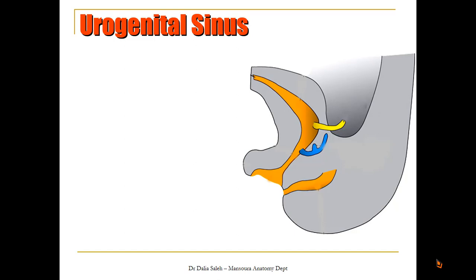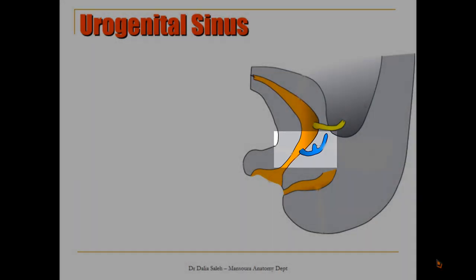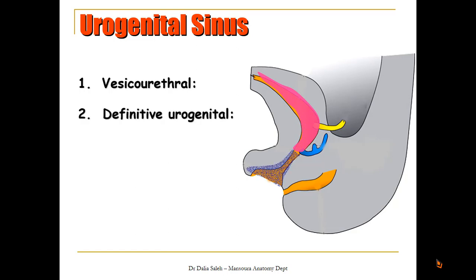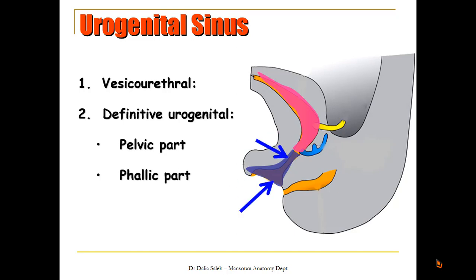In this diagram you can see the entrance of the mesonephric duct into the urogenital sinus. It will divide it into an upper part, called the vesico-urethral part, and a lower part, which is the definitive urogenital part. The definitive urogenital sinus is further divided into two parts: the pelvic part and the phallic part.